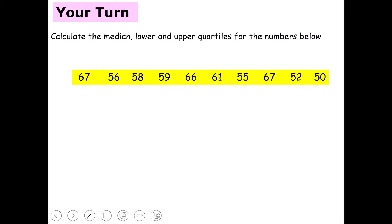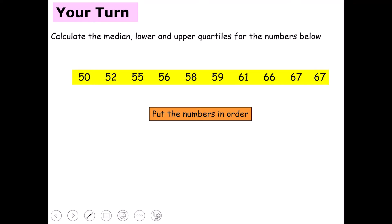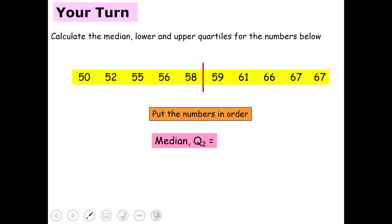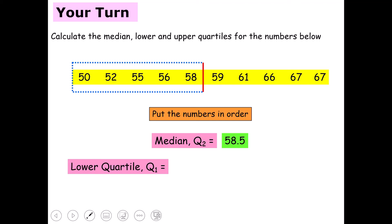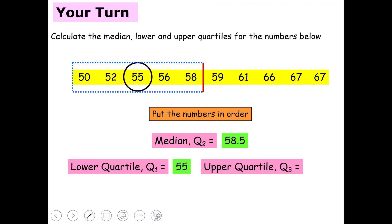Now it's your turn. Calculate the median, lower and upper quartiles of the numbers below, first by putting them in order. Remember, if the median falls between two numbers, add them together and divide by two. Pause here and give these a go. The solution: after ordering the numbers, our median Q2 falls between 58 and 59, giving 58.5. Quartile 1 is the median of the lower set, which is 55. And the upper quartile is the median of the upper set, which is 66. Well done if you got those.